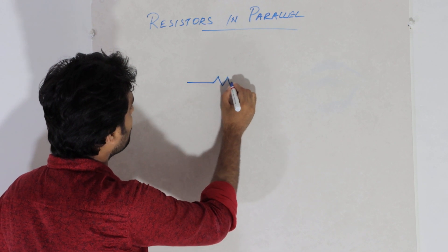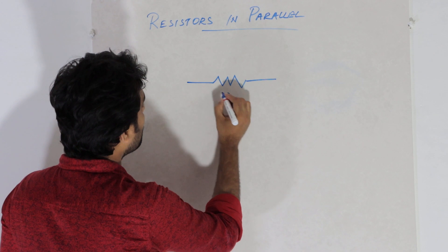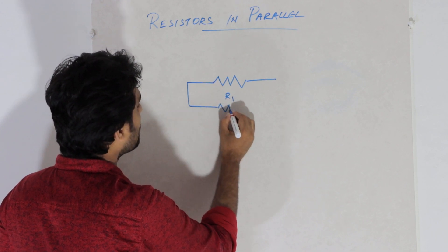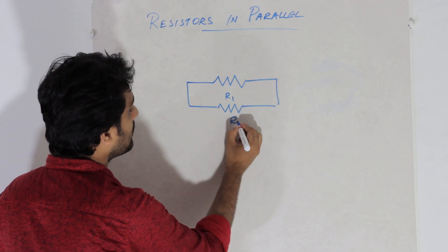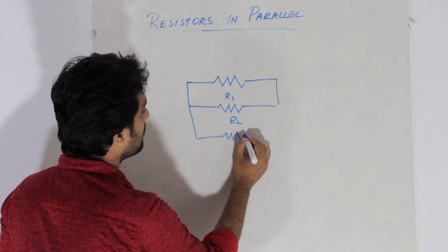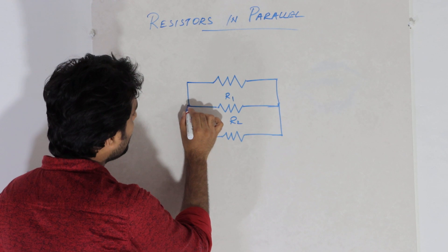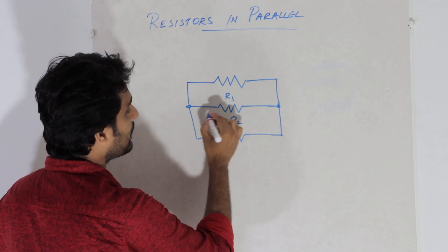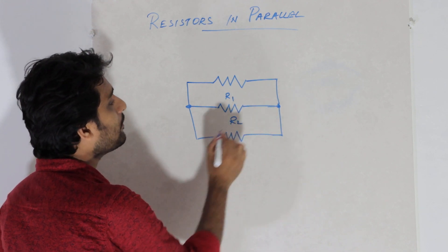So first one, this is R1, R2, R3. All these two points — R1, R2, R3 — everything is common between the two points.